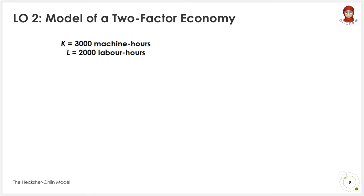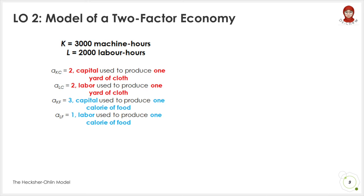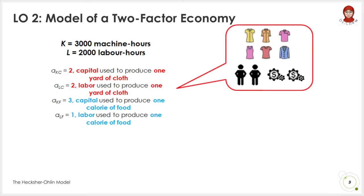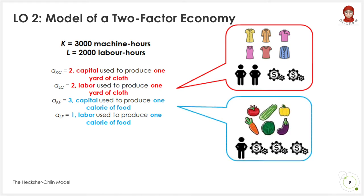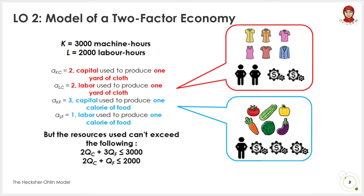We assume that an economy is endowed with 3,000 units of machine hours along with 2,000 units of work hours. In order to produce one yard of clothes, it requires two units of capital and two units of labour. Whereas, in order to produce one calorie of food, it requires three units of capital and one unit of labour. Therefore, the total machine hours used for both clothes and food production cannot exceed the total supply of capital — that is, 3,000 units of machine hours. This is the resource constraint for capital. Similarly, the resource constraint for labour states that the total work hours used in production cannot exceed the total supply of labour — that is, 2,000 units of work hours.